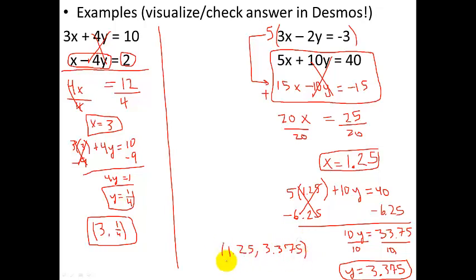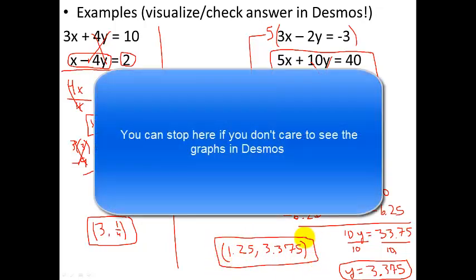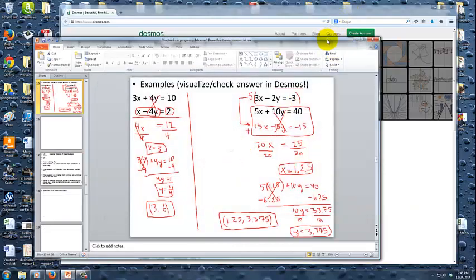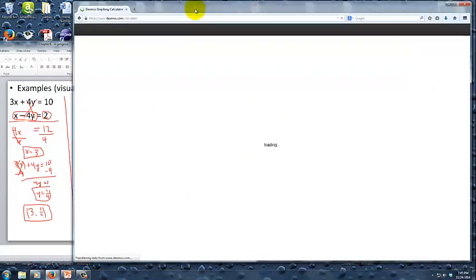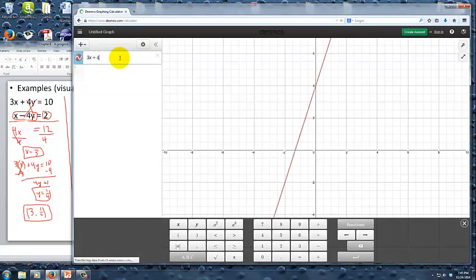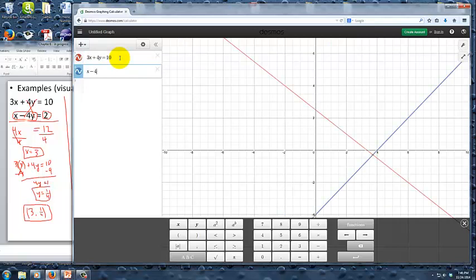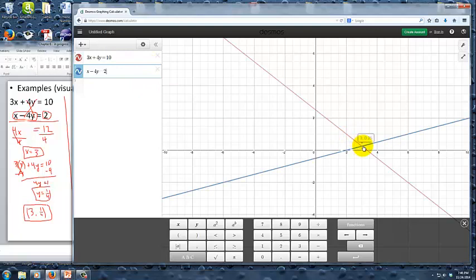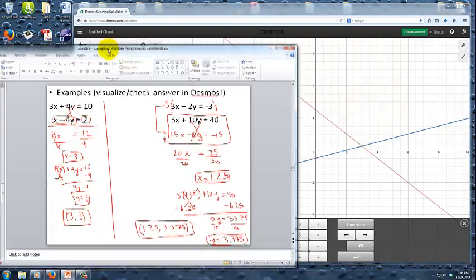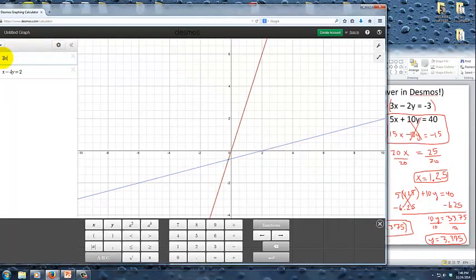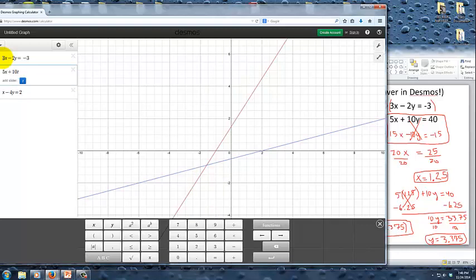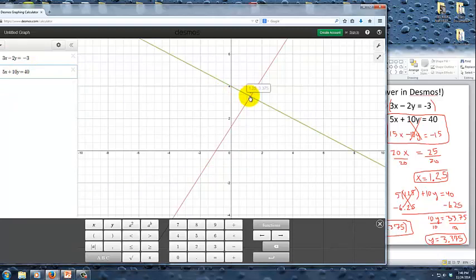And then, just to remind you that you can check these in Desmos. Let me show you what that would look like. So, we go over here to Desmos. And let me launch the calculator. And let me type in these two equations. 3x plus 4y equals 10. And x minus 4y equals 2. And so, I can see right here that the point where they cross is 3 comma 0.25 or 3 and 1 quarter. Which is the answer for this one. And then, let me shift it over and do the other one. So, I can type in here this first equation. 3x minus 2y equals negative 3. And the next one, 5x plus 10y equals 40. And I can see where these guys cross. And it is 1.25, 3.375, just like we got. So, it's a confirmation that we did these correct.